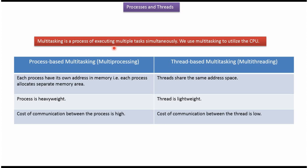Multitasking is a process of executing multiple tasks simultaneously. We use multitasking to utilize the CPU. There are two kinds of multitasking. The first one is process-based multitasking, also called multiprocessing. And the second one is thread-based multitasking, which is also called multithreading.